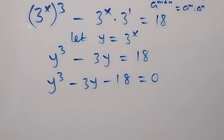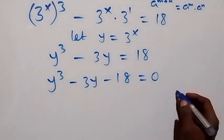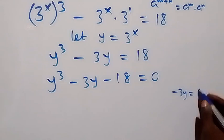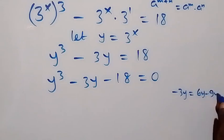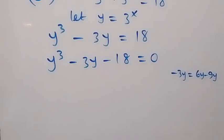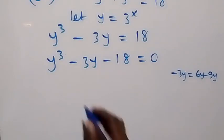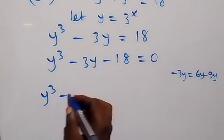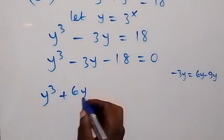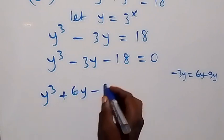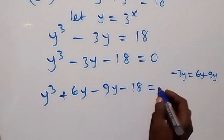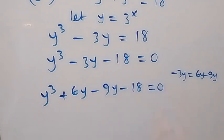And here we can write minus 3y as 6y minus 9y. So here, that means this becomes y raised to power 3 plus 6y minus 9y minus 18 equals 0.